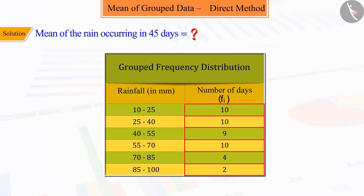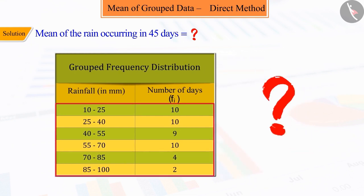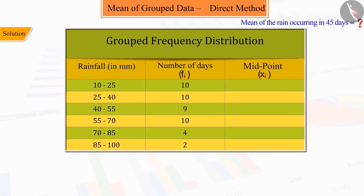So now, can you find the mean with the help of this table? Correct! To find the mean, we first find the class mark or the midpoint of each class interval, which is denoted by xi.